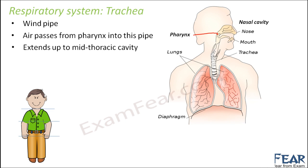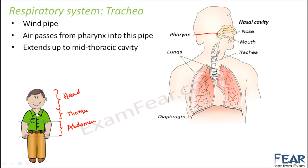What is this thoracic cavity? Our entire body is divided into three parts. The upper portion is known as the head. The next portion is known as the thorax. And then the next lower portion is known as the abdomen. So this entire cavity is called the thoracic cavity — the cavity which contains the thorax — and this entire cavity is known as the abdominal cavity. Trachea extends up to the middle of this thoracic cavity.